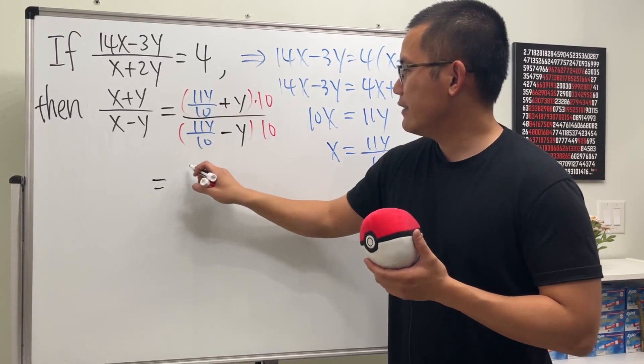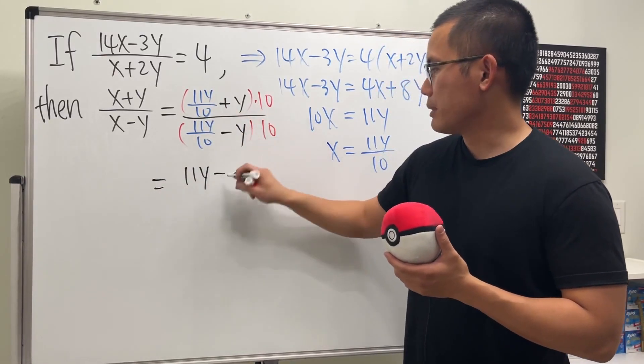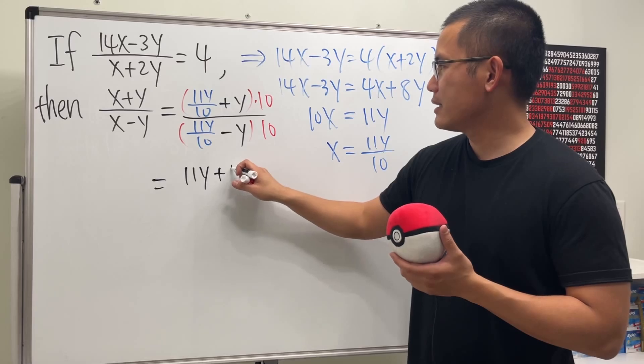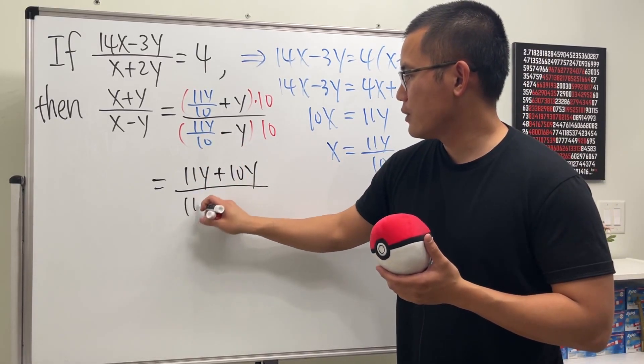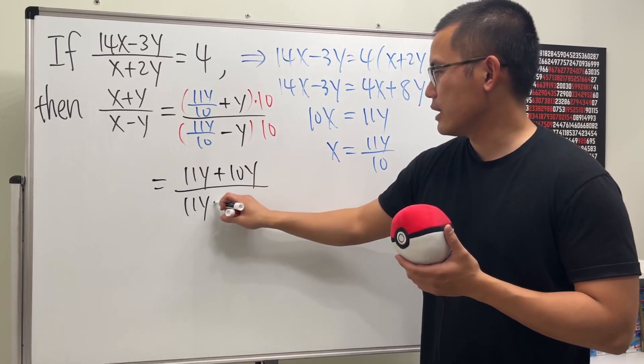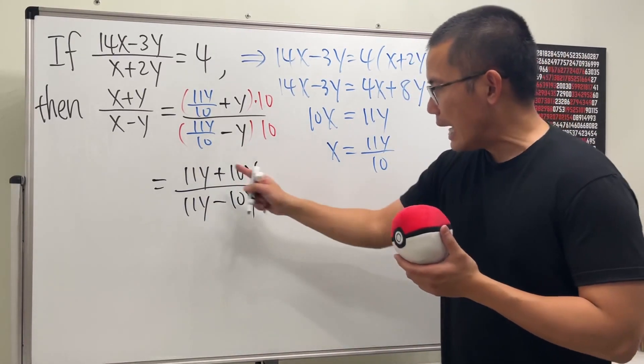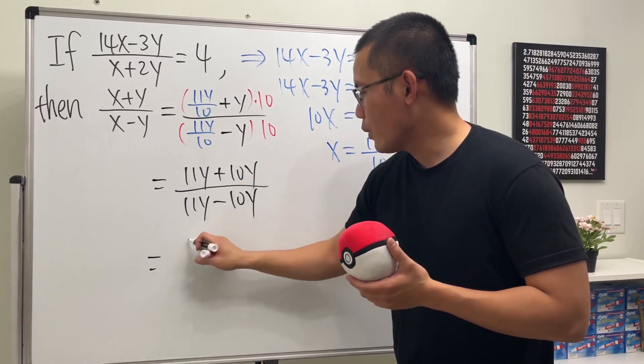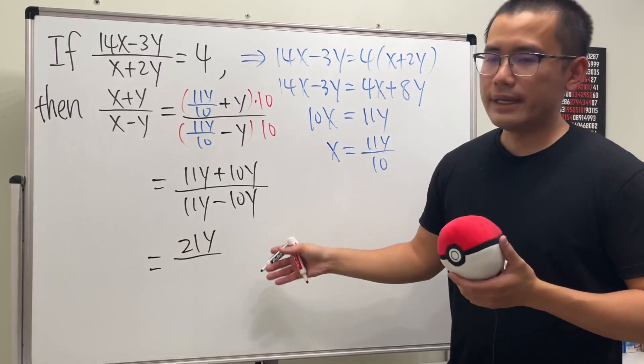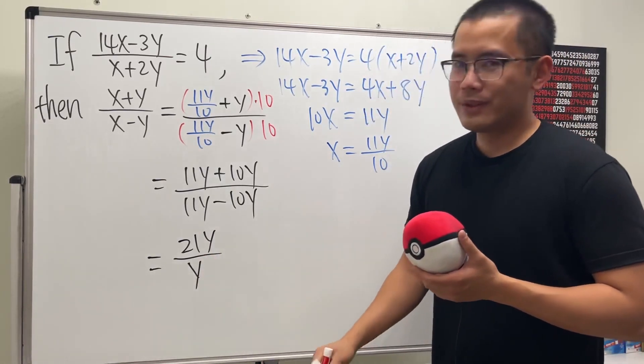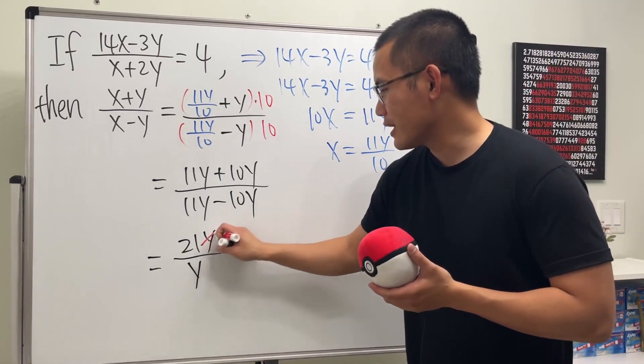And then let's see. This is going to give us 11y plus this and that is 10y over this times that is 11y because they cancel and then minus 10y. You see, on the top, we get 21y over 11y minus 10y is just y. This is very nice because we can just cancel the y.